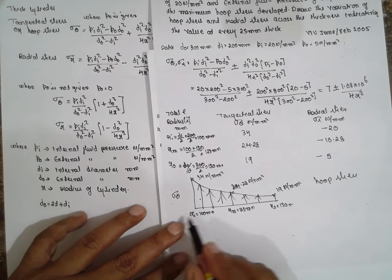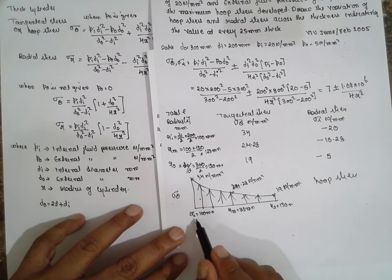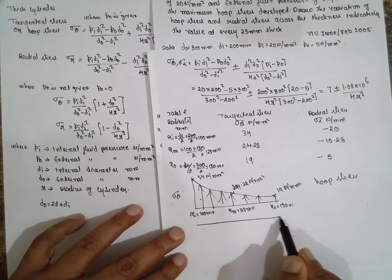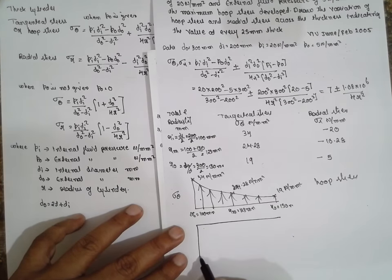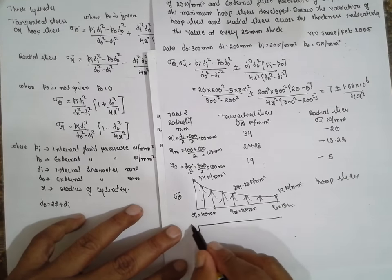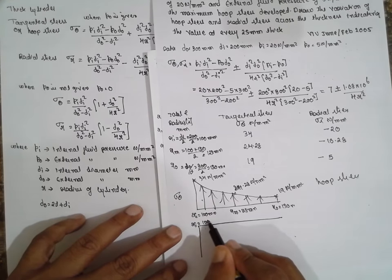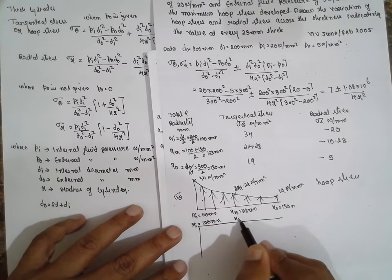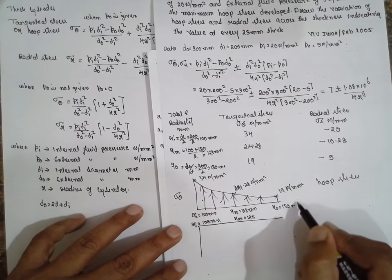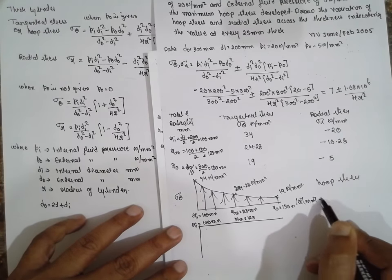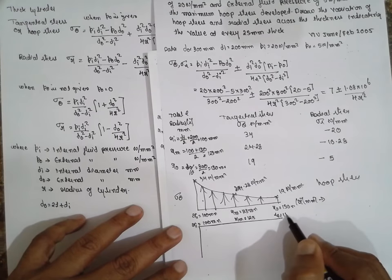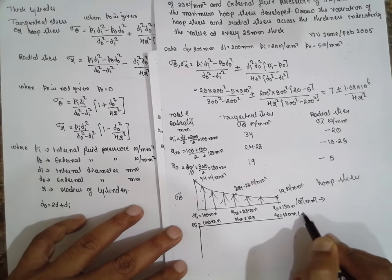Now second, exactly here. This Rᵢ value will remain same here, 100 mm. Rₘ will be 125. This means R in terms of mm. R₀ 150 mm. Rₘ.